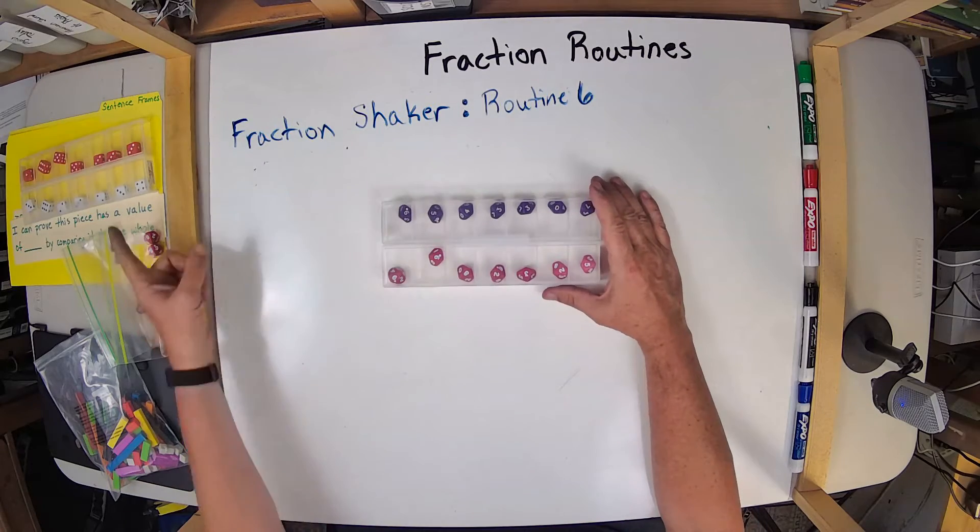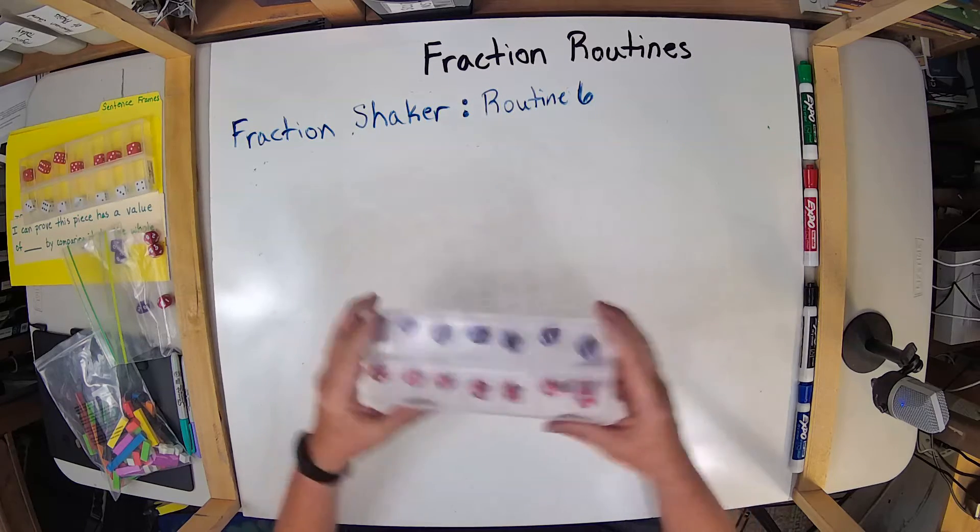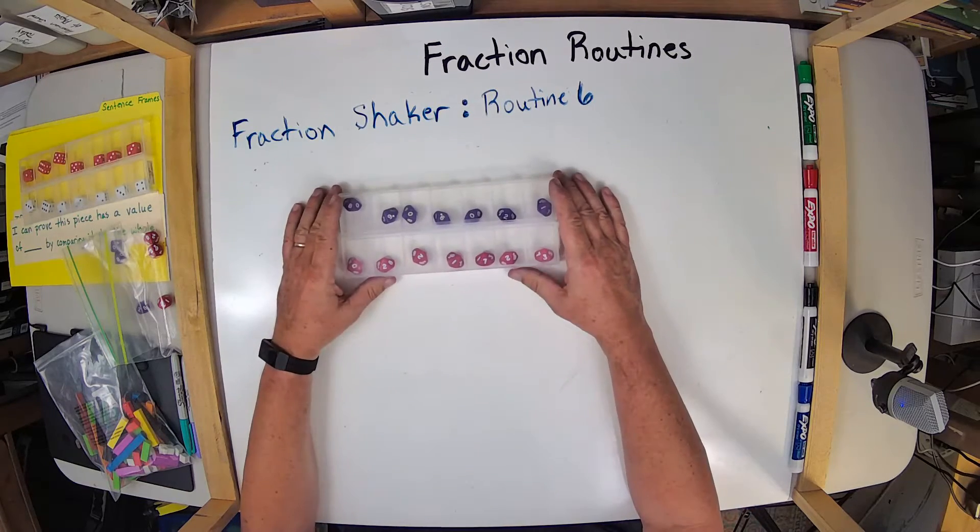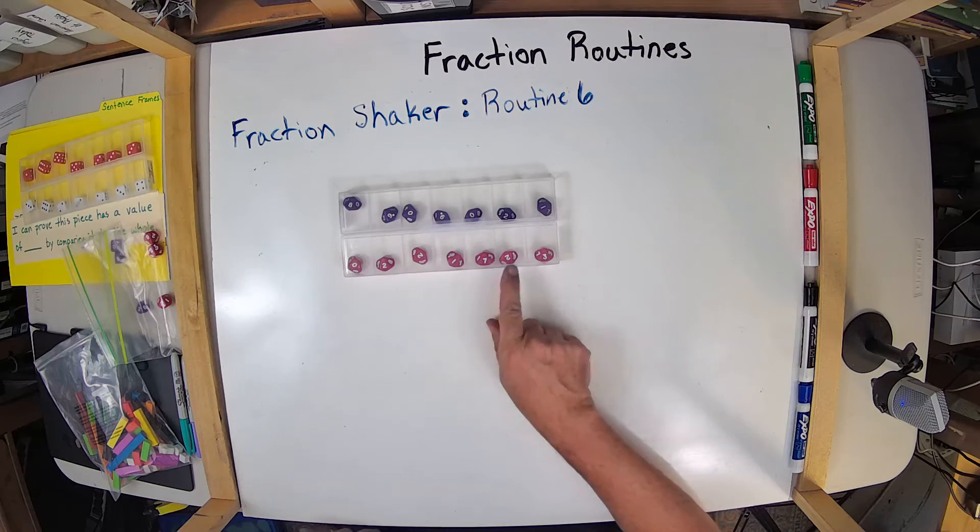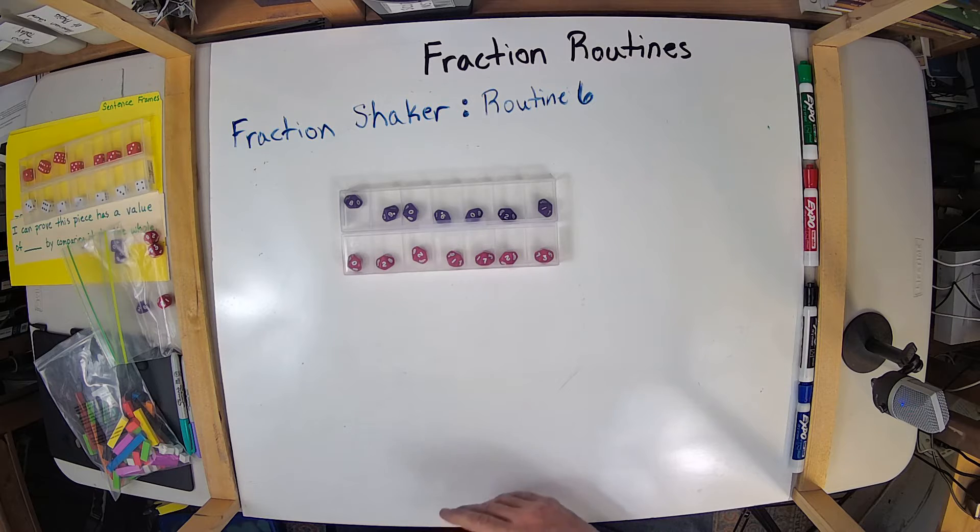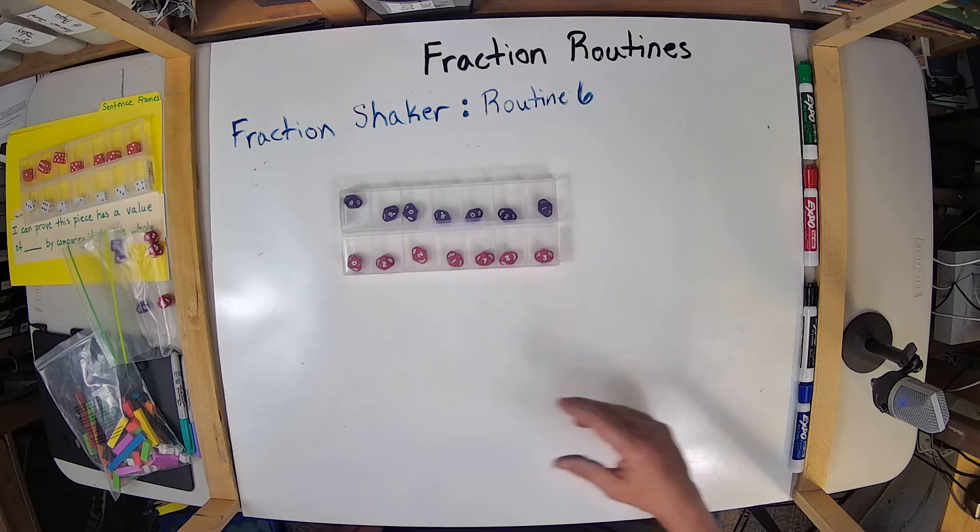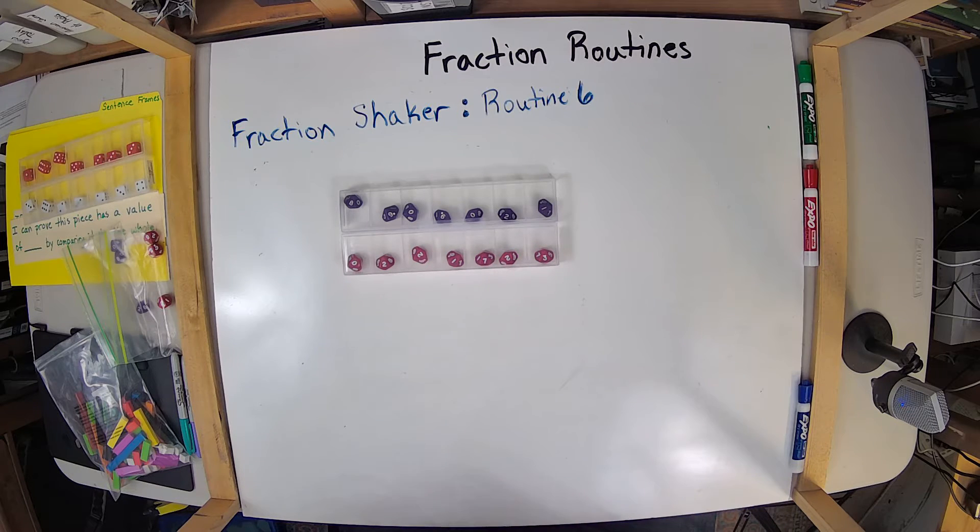You may decide to move to this after you feel comfortable that the students are understanding the simpler version. You can shake it up. You can do all the same routines, except now you have to train kids that when there's a zero in the denominator, then they can't use that one or they have to shake again. It's up to you. And so you can do all the same routines but using now a slightly more sophisticated set of numbers.